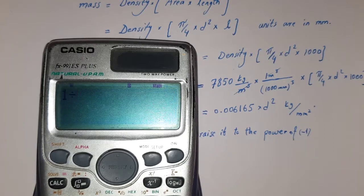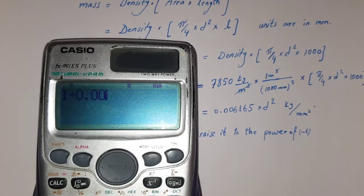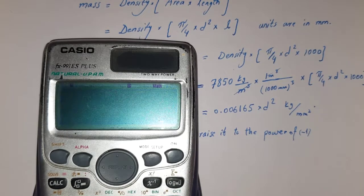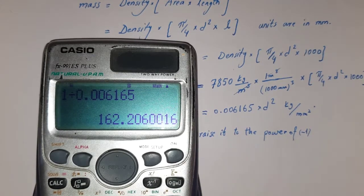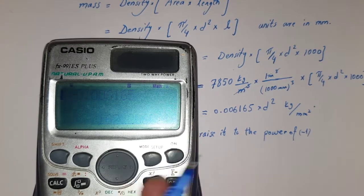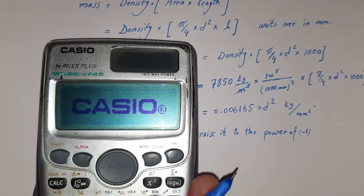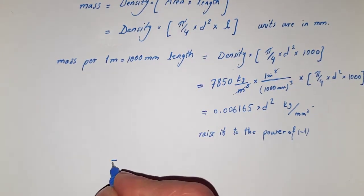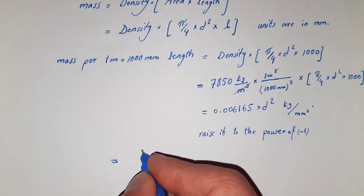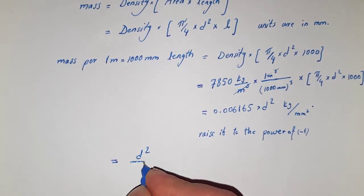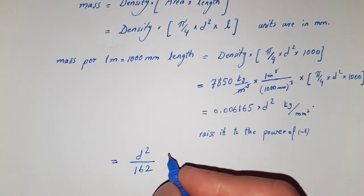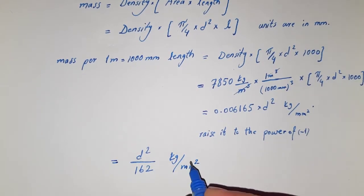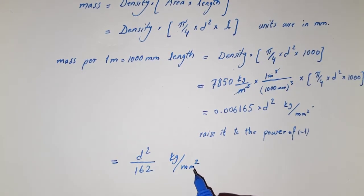1 divided by 0.006165. It's equal to 162.2, let's say 162. It is equal to d square upon 162 kg per millimeter square. This is the very famous formula which we can find the weight of the reinforcement bars.